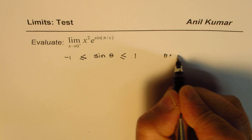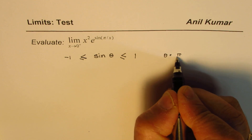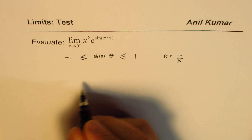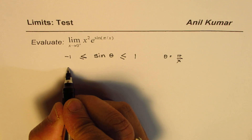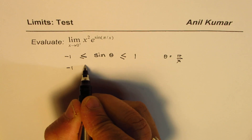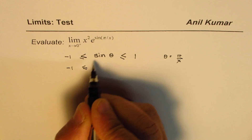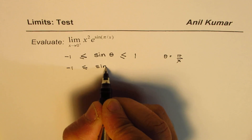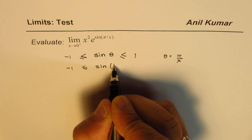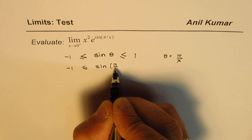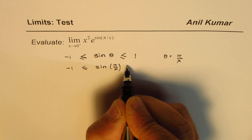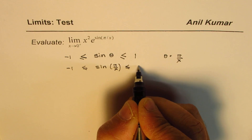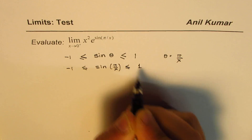Now, if theta equals pi by x, as given in this question, then for that particular value also, sine pi by x will also be between minus 1 and plus 1.